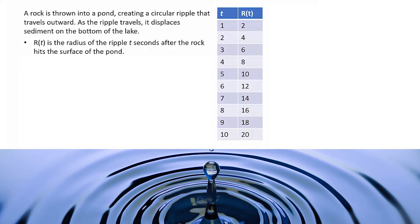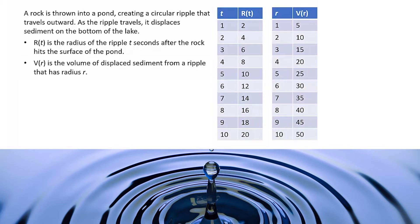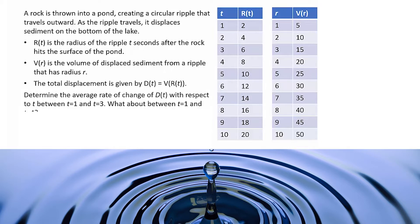R(t) is the radius of the ripple t seconds after the rock hits the surface of the pond. V(r) is the volume of displaced sediment from a ripple that has radius r. The total displacement is given by D(t) = V(R(t)). Determine the average rate of change of D with respect to t between t equals 1 and t equals 3, and then for t equals 1 and t equals 4.